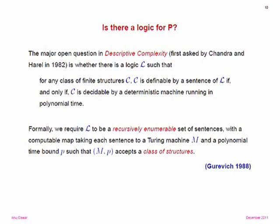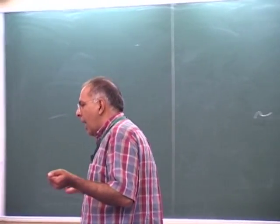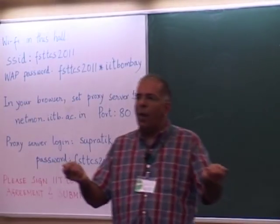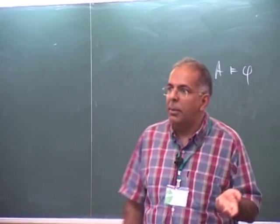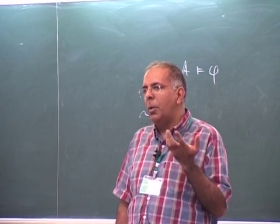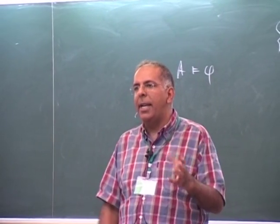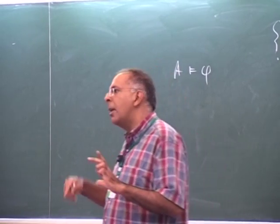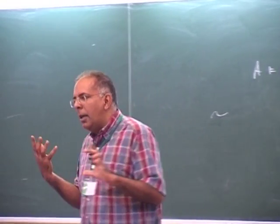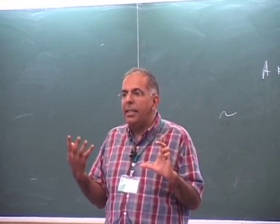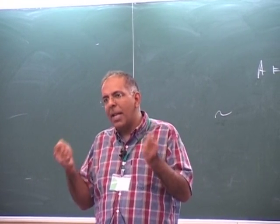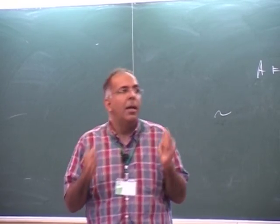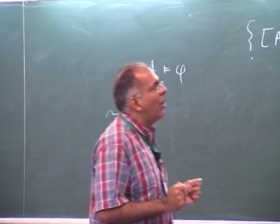What does it mean to give a logic? If we had a positive answer and I demonstrated a logic, we might all agree that this is an answer. What would a negative answer amount to? That was proposed by Gurevich in a paper in 1988, in which he gave a precise mathematical conjecture — he conjectured that there was no logic for polynomial time and gave a precise mathematical statement of what that would mean.